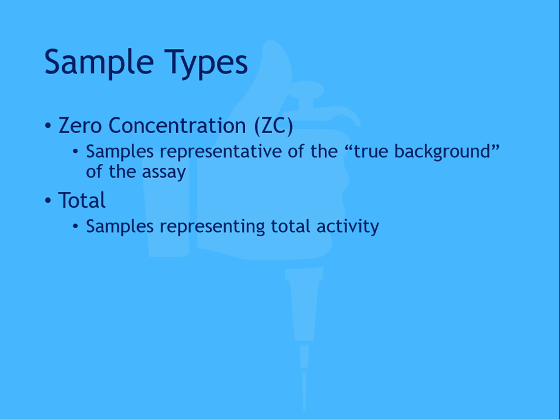The total samples measure total activity and serve as a control for enzymatic activity of the enzyme linked to the tracer. The tracer is added to the well or tube after any wash steps, which removes any opportunity for binding and represents a maximum level of enzymatic activity.